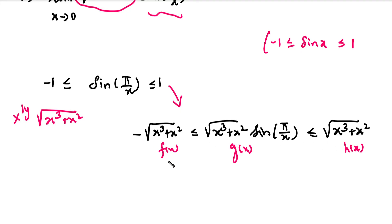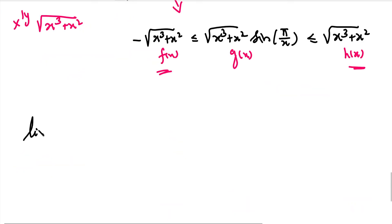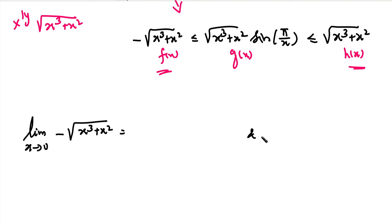Now let's check what we need to do. f(x) has its limit and h(x) has its limit. In the question, x tends to 0. So we find the limit of f(x) and h(x) as x tends to 0. limit x tends to 0 of minus √(x³ + x²), and limit x tends to 0 of √(x³ + x²). We substitute x = 0: √(0 + 0) = 0. So both limits equal 0.